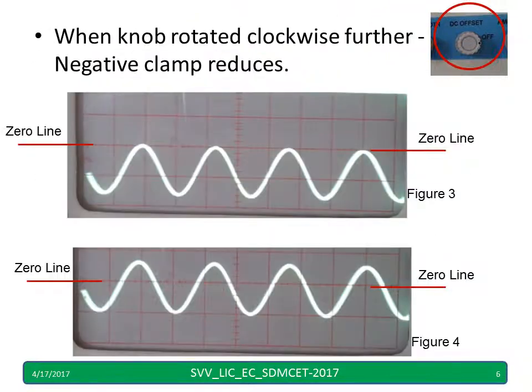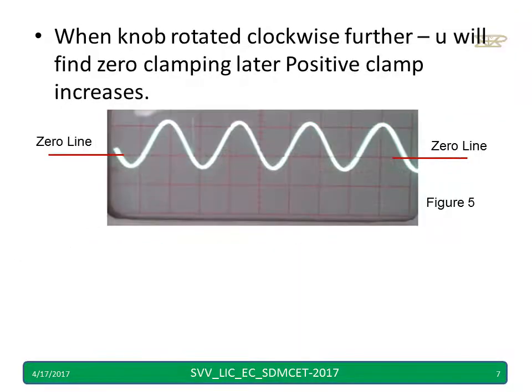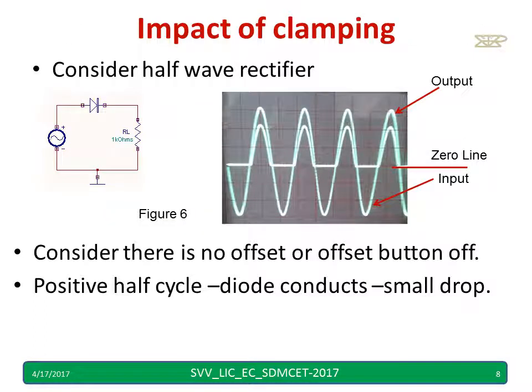When you start rotating clockwise, that negative clamping starts reducing. When you rotate further, it will become zero and start coming towards the positive as well. In figure number 3, everything is below zero but touches the zero line. In figure number 4, a small portion has come into the positive voltages. When you further rotate the knob clockwise, it starts giving a positive clamp.